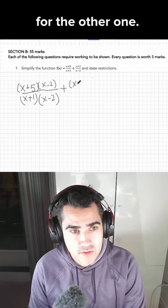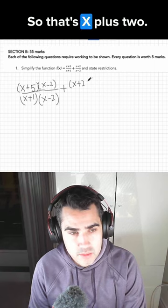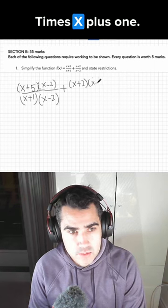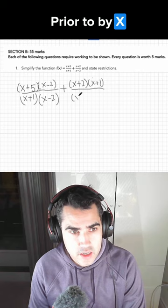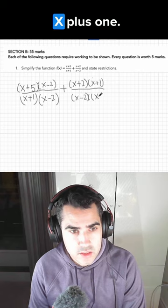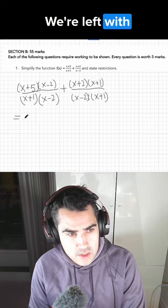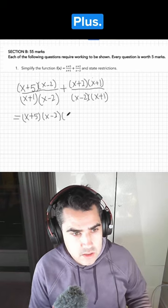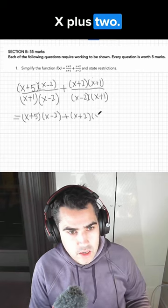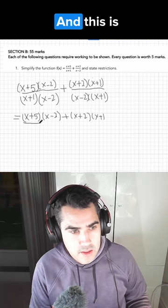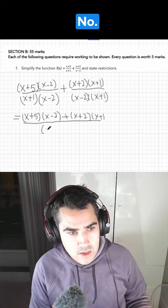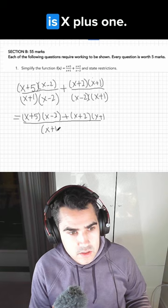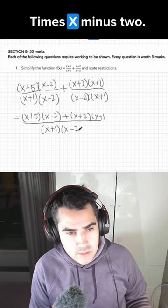And then we'll do the same thing for the other one. So it's x plus 2 times x plus 1 divided by x minus 2, x plus 1. We're left with x plus 5, x minus 2, plus x plus 2, x plus 1. And this is all one term now, and the common denominator is x plus 1 times x minus 2.